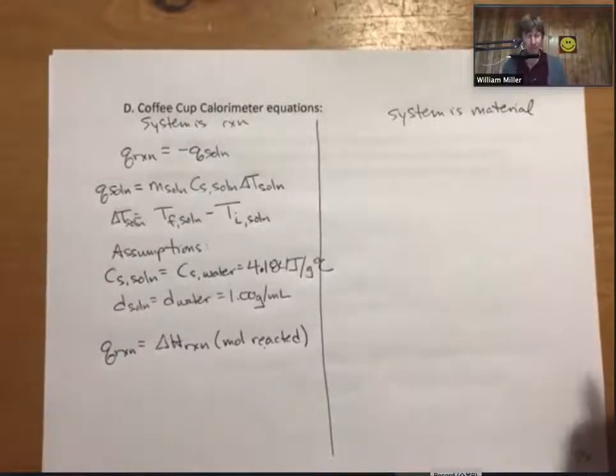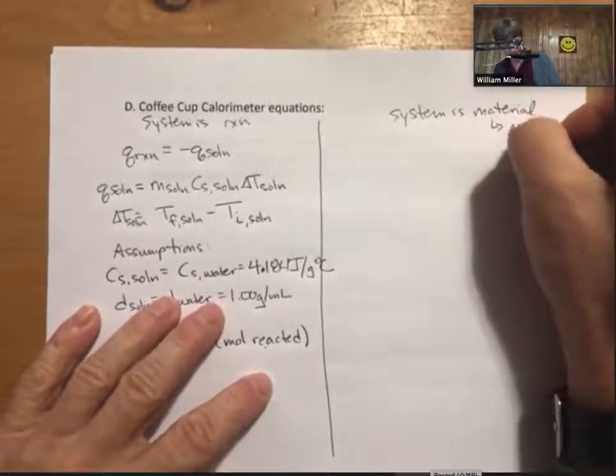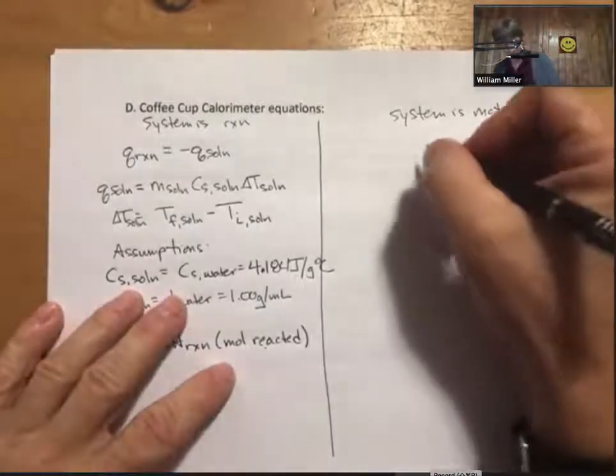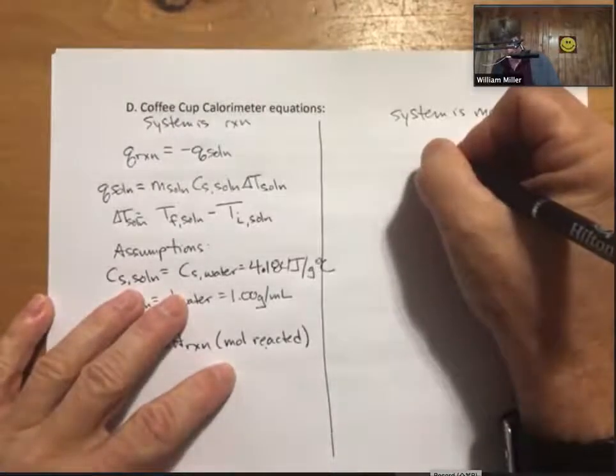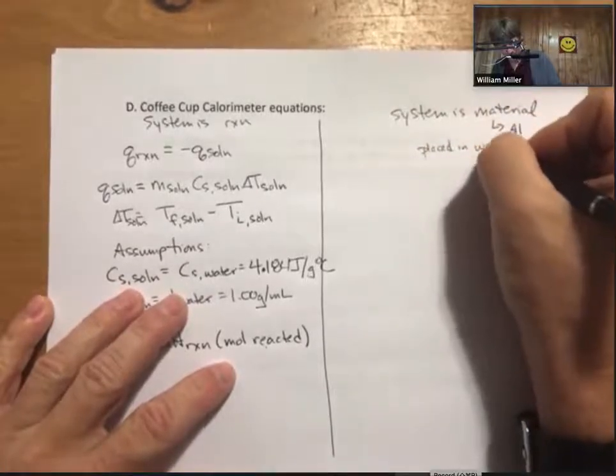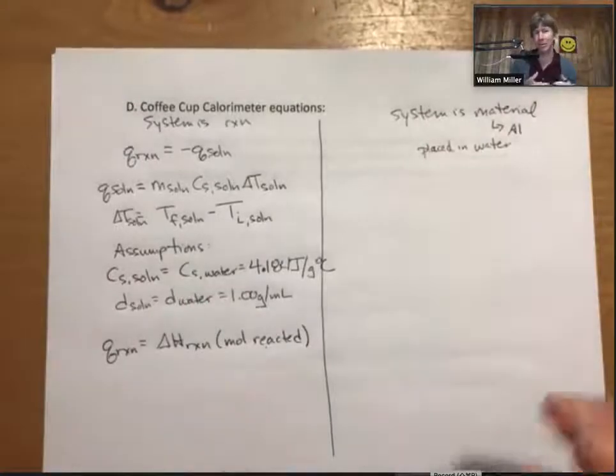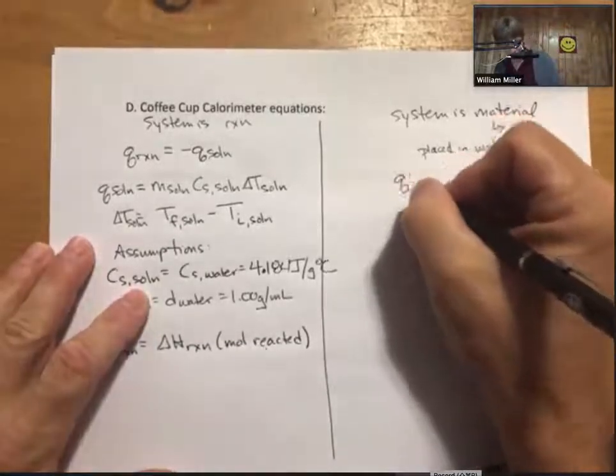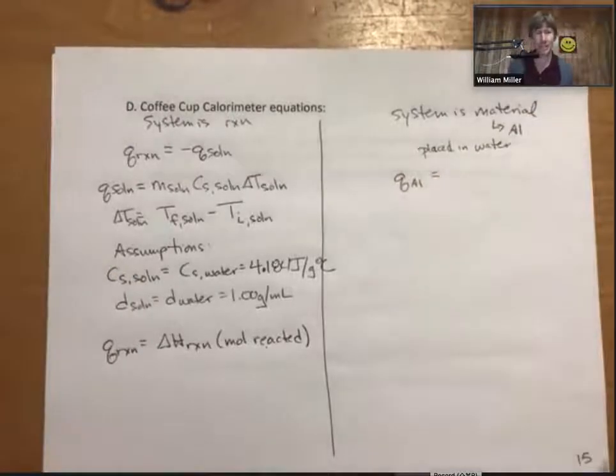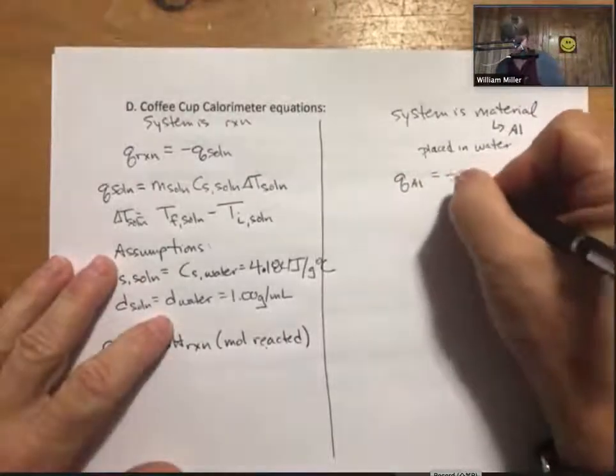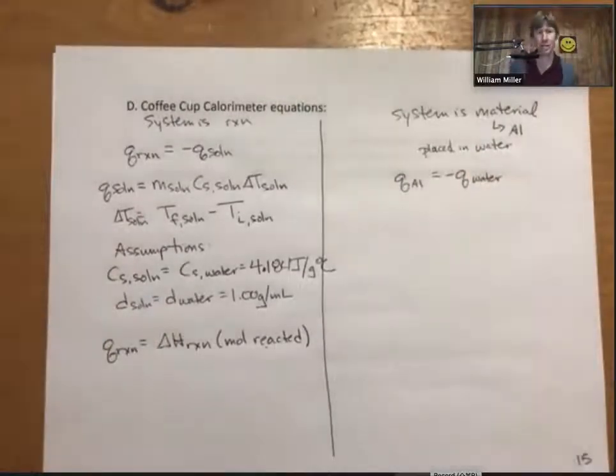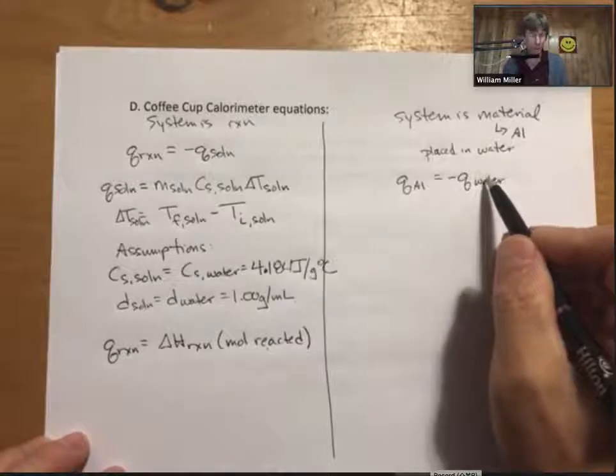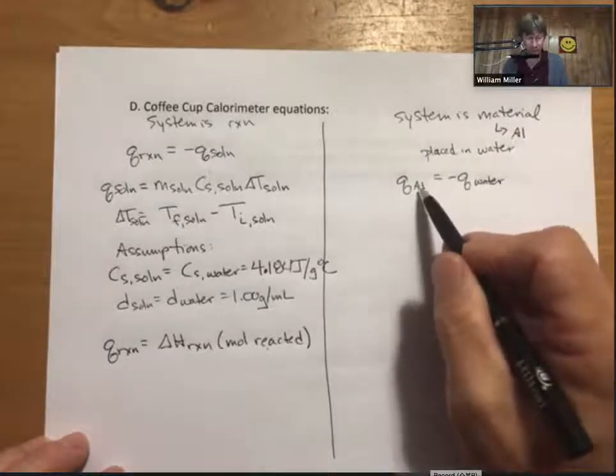Anyway, we'll do some problems coming up, but this is the overall setup. It's similar when the system is a material. Let's assume that the material is aluminum and that aluminum is being placed in water. So aluminum placed in water. The material is typically placed in water. The heat of the aluminum equals minus Q of the water. This just says all the heat given off or taken in by the aluminum goes to the water or comes from the water. Now these are two materials, so no reaction involved.